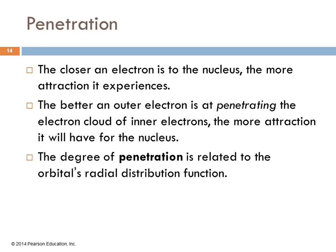There's also an idea of penetration. That the closer the electron is to the nucleus, the more attraction it experiences. And some types of orbitals are better at penetrating than others. So if we have an outer electron, one in one of the higher energy levels, if it's better at penetrating the electron cloud of the inner electrons, it's going to have more attraction for the nucleus. So the degree of penetration is related to the orbital's radial distribution function. If it's got a really big node in the center, it's not going to have very much penetration and it's not going to have as much attraction to the nucleus as, say, like an S orbital that has better penetration.